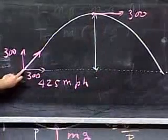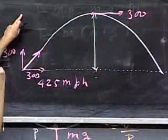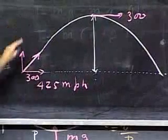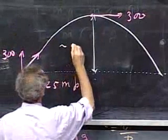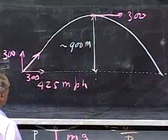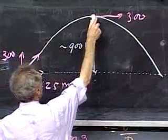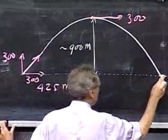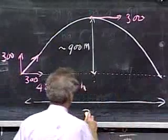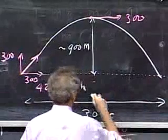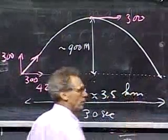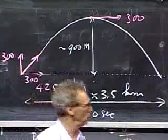You should be able to calculate with all the tools that you have available how high this goes from this level. In other words, what is the time that the velocity in the y direction comes to zero? Very crude numbers: this is about 900 meters. And it will take about 15 seconds to reach this point, so it will take about 30 seconds to go from here to here. And in those 30 seconds, the horizontal displacement is about three and a half kilometers.